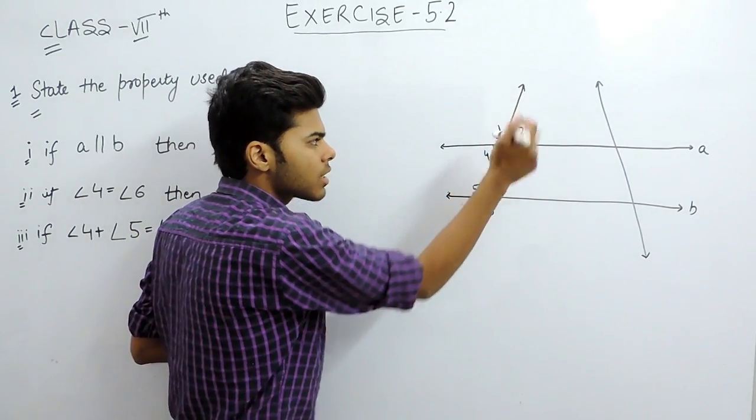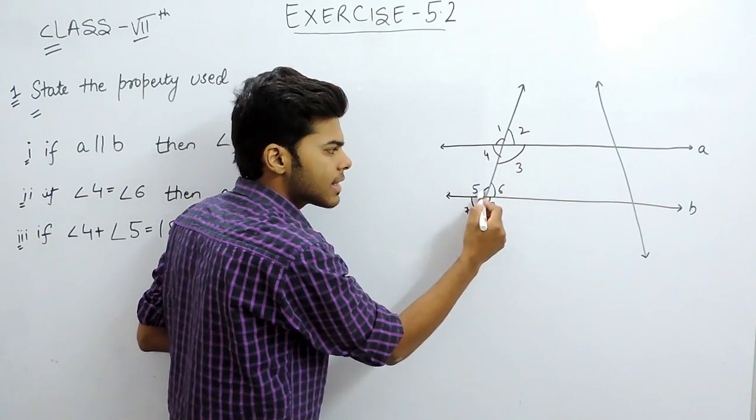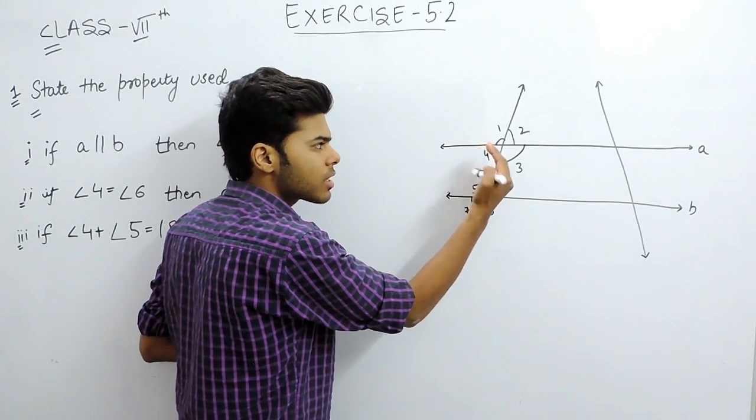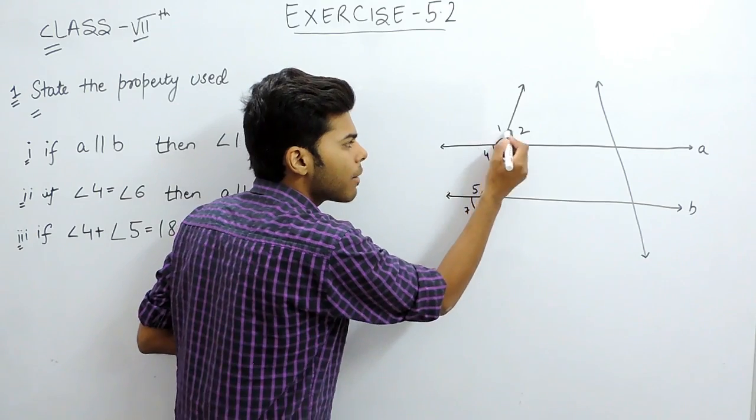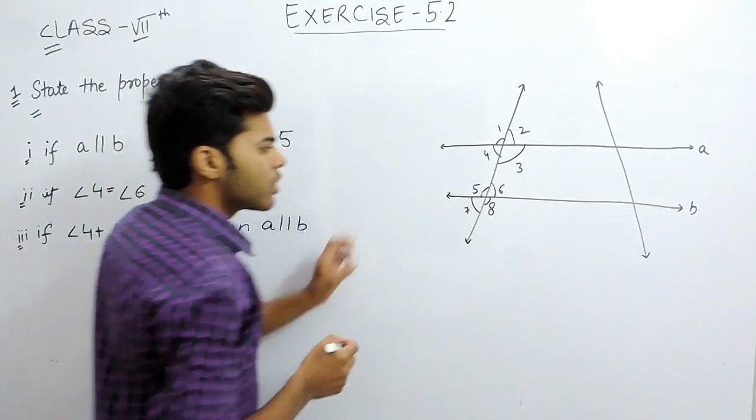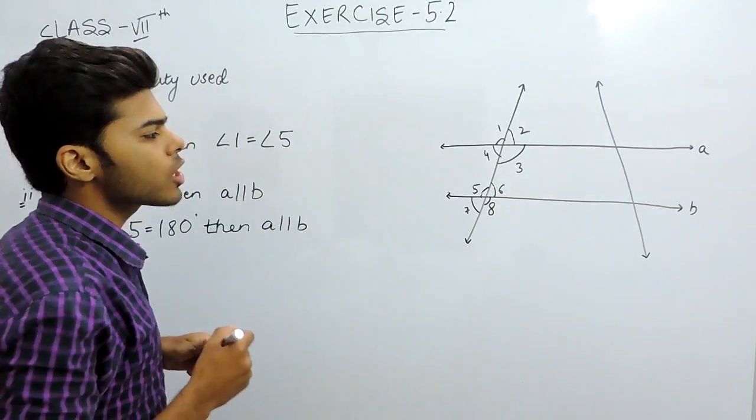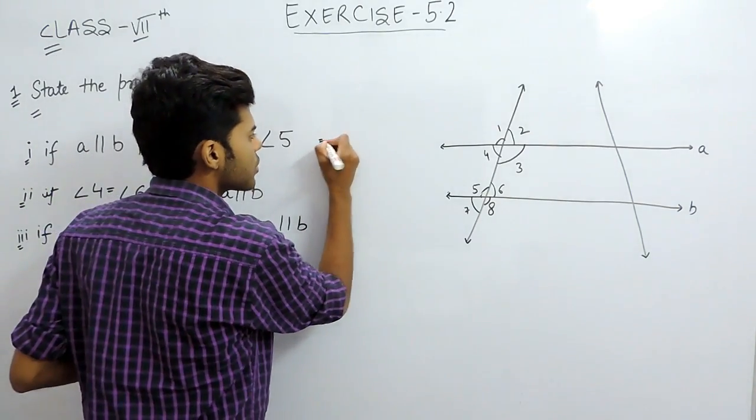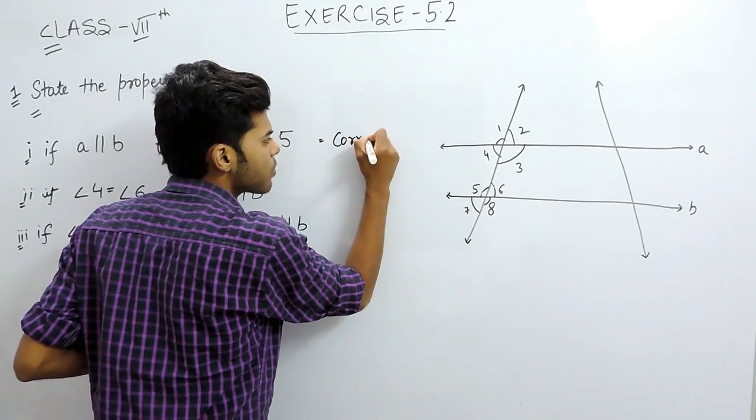So this is a transversal, this is angle 1, this is angle 5. They are on the same side of the transversal and they both are above the parallel lines. So these two are equal by corresponding angles.